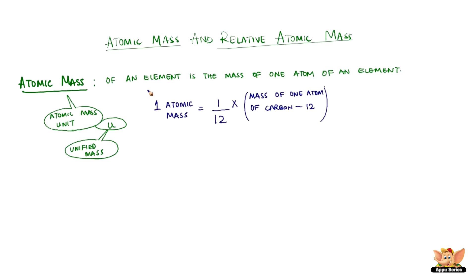One atomic mass unit is a mass equal to exactly one-twelfth the mass of one atom of carbon-12.